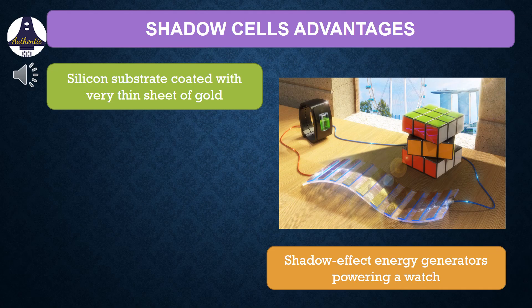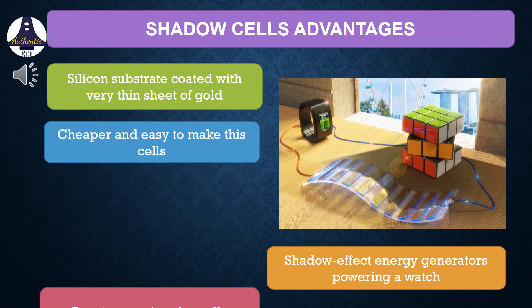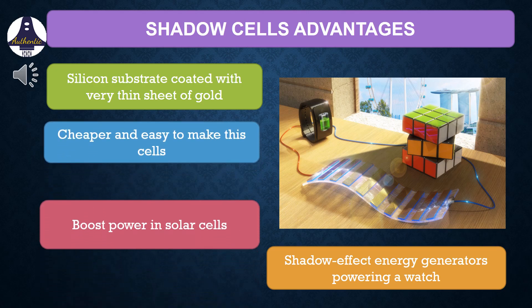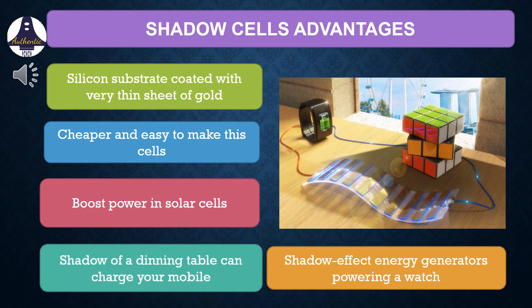Now let's see the advantages of shadow cells. A shadow cell is made up of a silicon substrate coated with very thin sheet of gold. It is cheaper and easy to make compared to the solar cells. It can be used along with solar cells to boost its power.